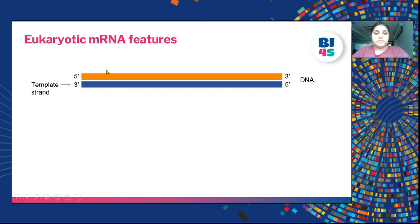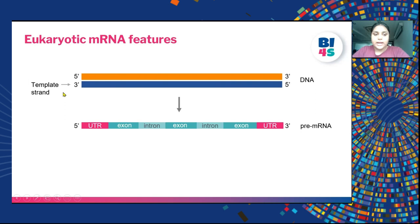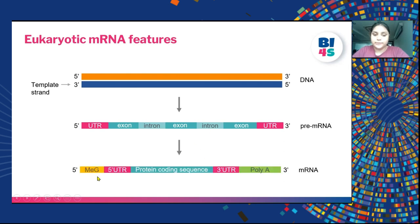The features of mRNAs: the double-stranded DNA with the 3' to 5' template strand is transcribed to pre-mRNA, which has a 5' UTR (untranslated region), a 3' UTR, exons and introns. Exons are the parts translated into the coding (protein) sequence, while introns are spliced out to form the mature RNA. The mature mRNA has a 5' methylguanosine cap, 5' UTR, protein coding sequence made up of exons, 3' UTR and a poly-A tail.